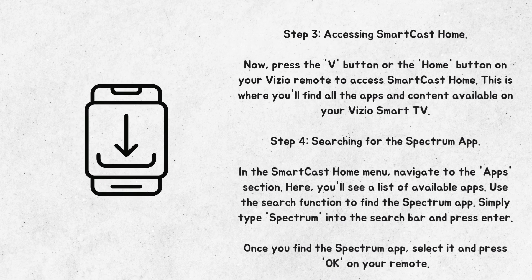Step 4: Searching for the Spectrum app. In the Smartcast Home menu, navigate to the App section. Here you'll see a list of available apps. Use the search function to find the Spectrum app — simply type Spectrum into the search bar and press Enter. Once you find the Spectrum app, select it and press OK on your remote.